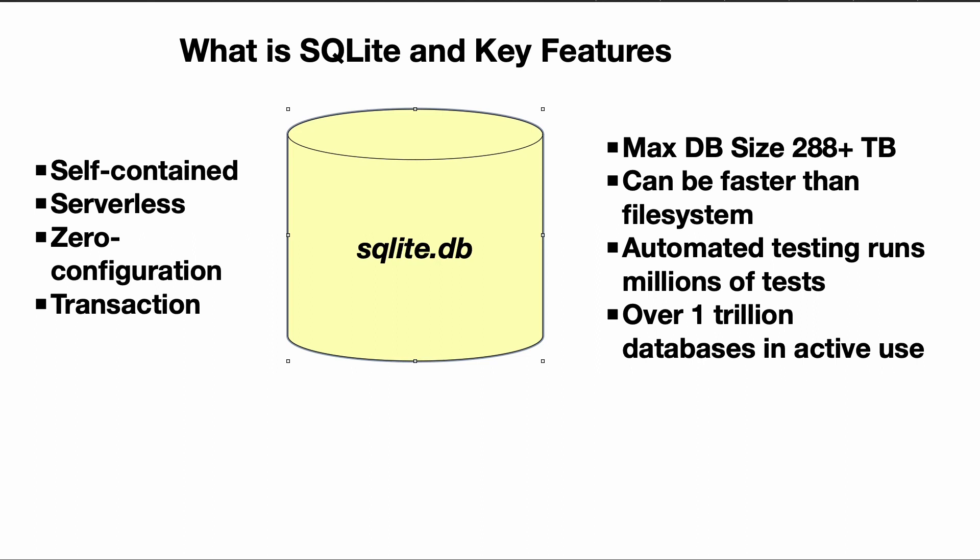SQLite can also be faster than the file system, which is a pretty unique feature. If you're doing something that's limited by the file system, this could be a performance optimization. SQLite also has thorough automated testing, with an extensive test suite with millions of tests that are run prior to every release, and billions of test cases run over time.